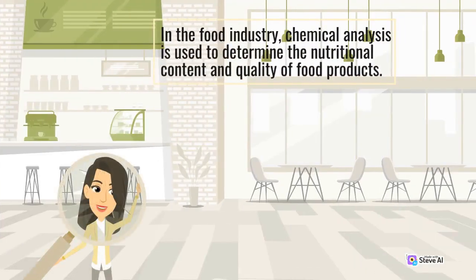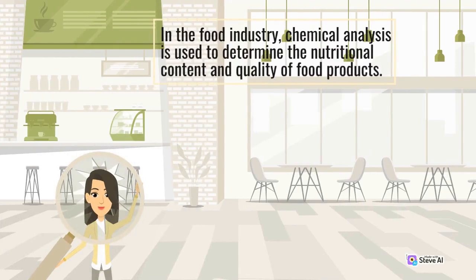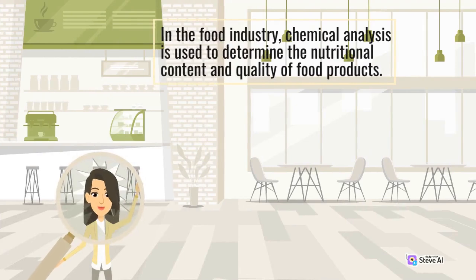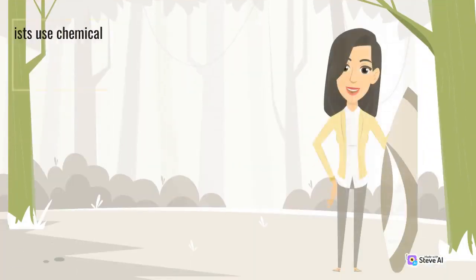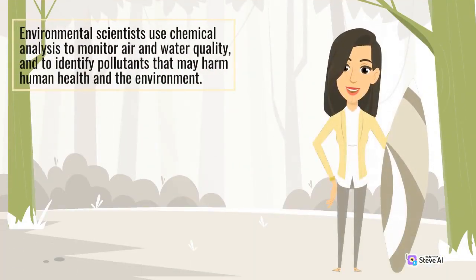In the food industry, chemical analysis is used to determine the nutritional content and quality of food products. Environmental scientists use chemical analysis to monitor air and water quality, and to identify pollutants that may harm human health and the environment.